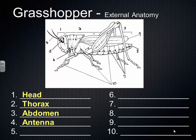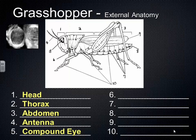Insects also have eyes, and they have a unique type called a compound eye. The compound eye is made of multiple lenses all in one area — compound meaning many parts. Here's an actual photograph of a compound eye; you can see all those individual lenses that make it up. The grasshopper also has some simple eyes — two compound eyes and usually three simple eyes.